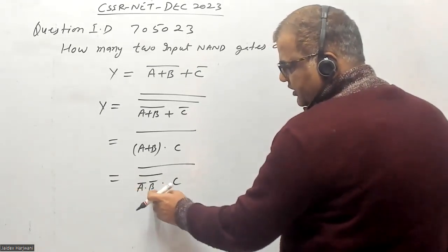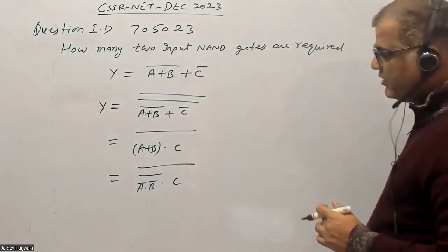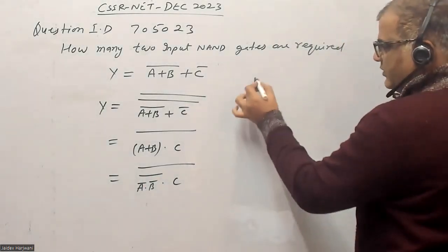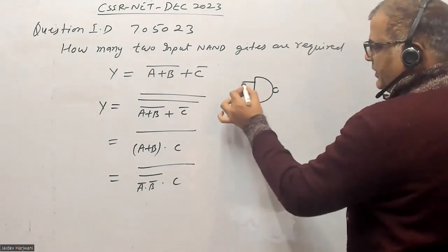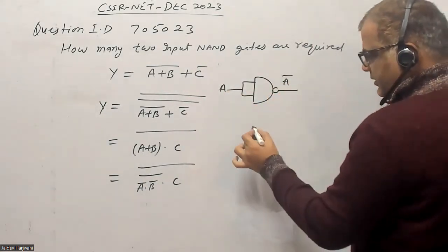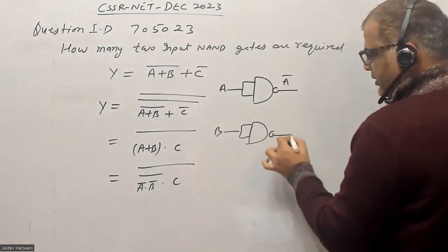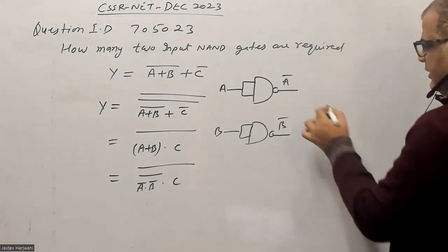So you require three here and finally you require one more, four. So total four NAND gates are required. So you want first A bar and then you require this B bar.